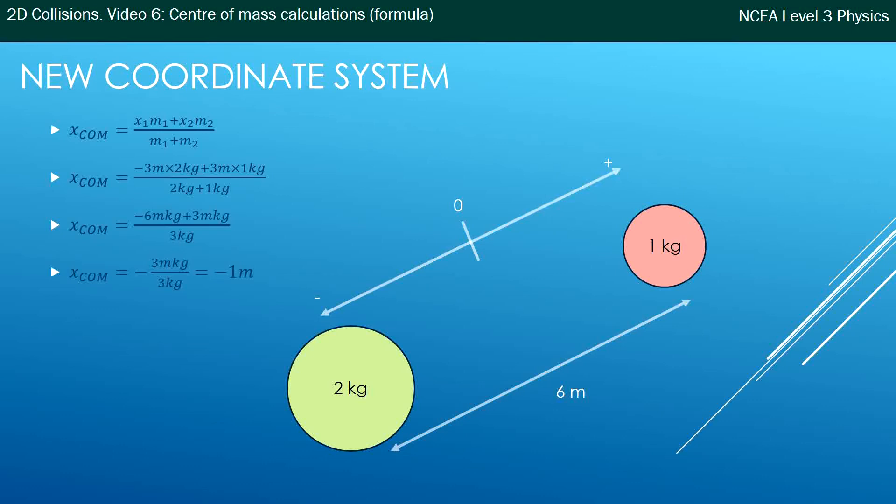Well it means it's negative 1 from where you've chosen your origin. Now you chose your origin in the middle so negative 1 is to the left, which is in the middle being at 3 meters and 1 meter closer to the 2 kg ball is still 2 meters from the 2 kg ball. So you get exactly the same answer using a different coordinate system.